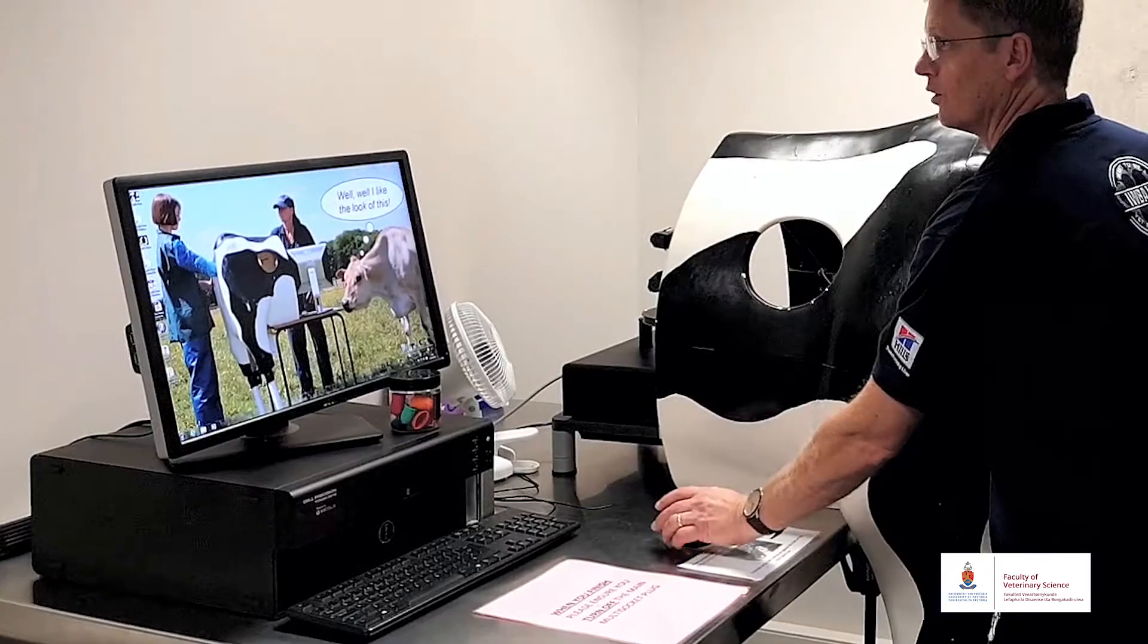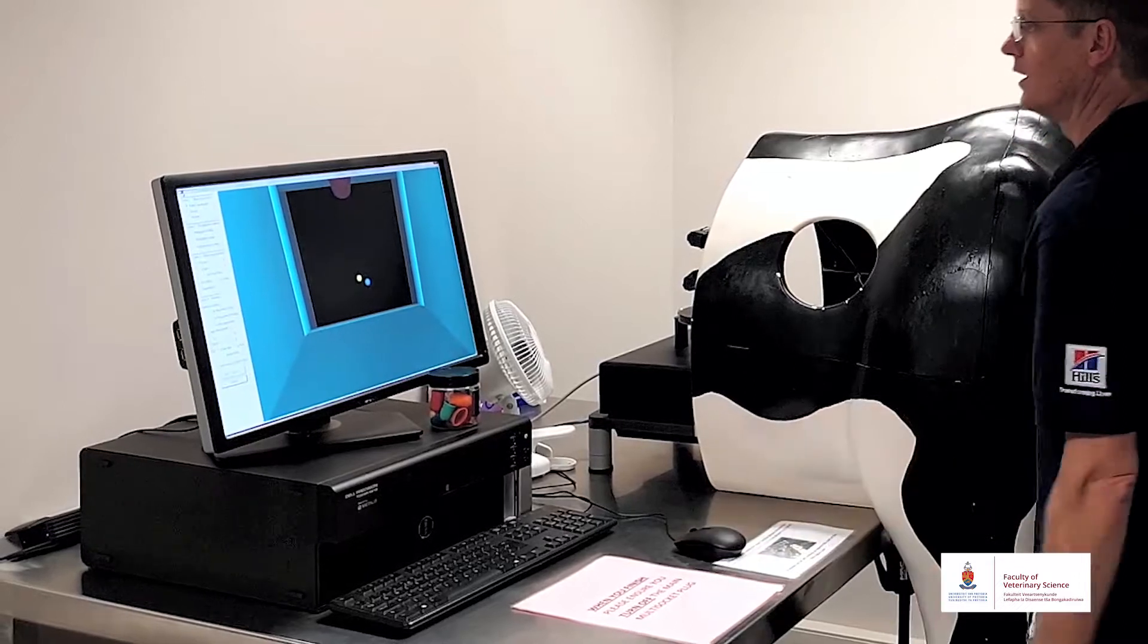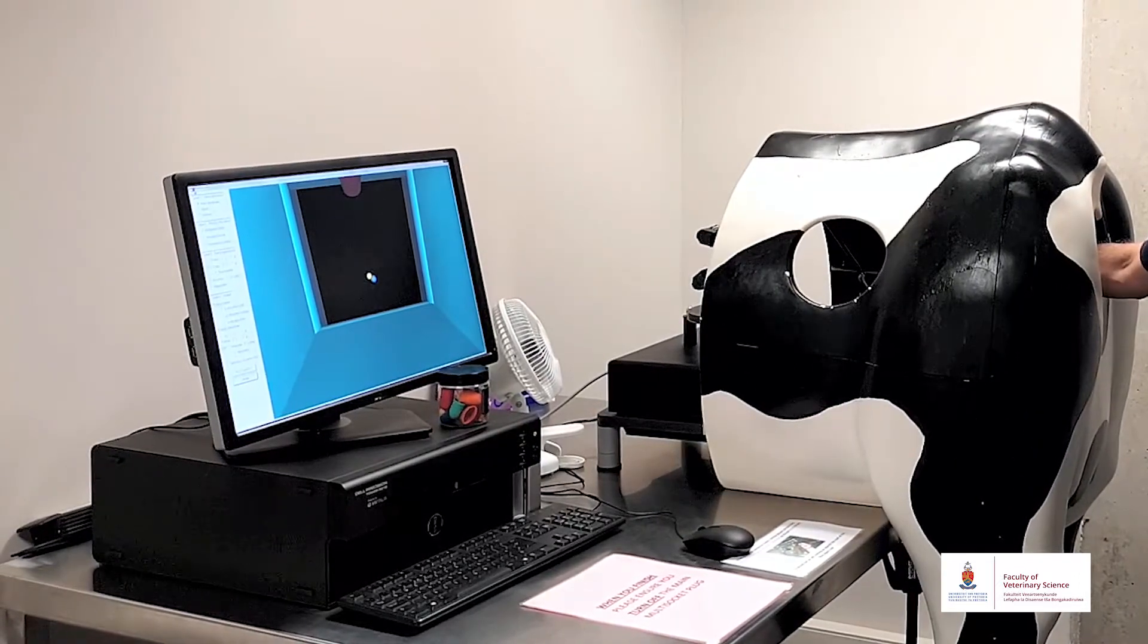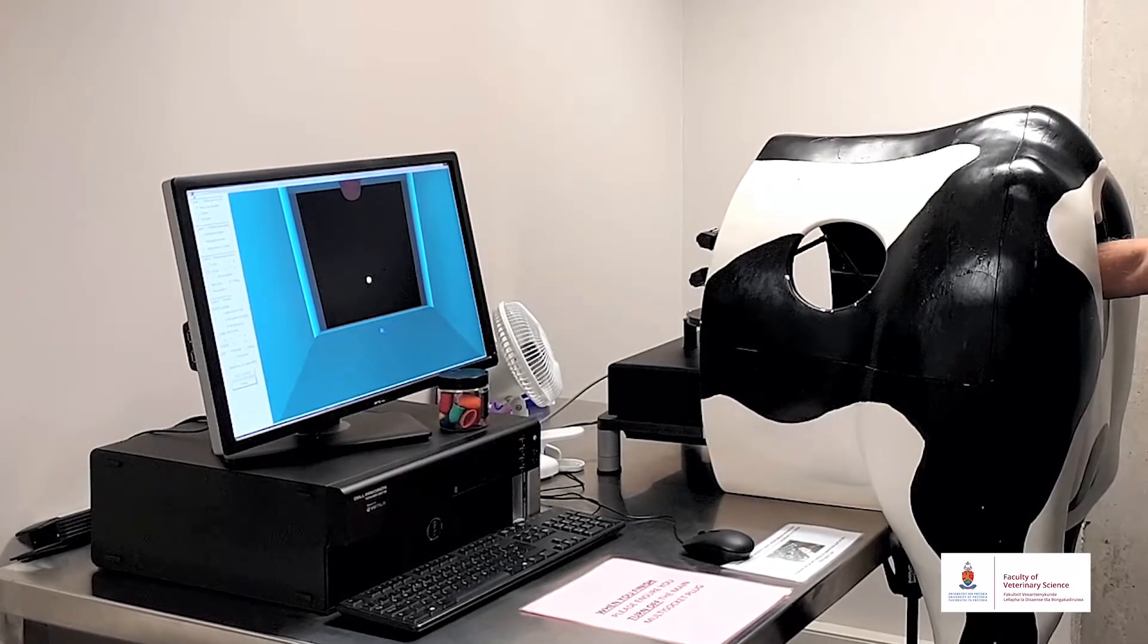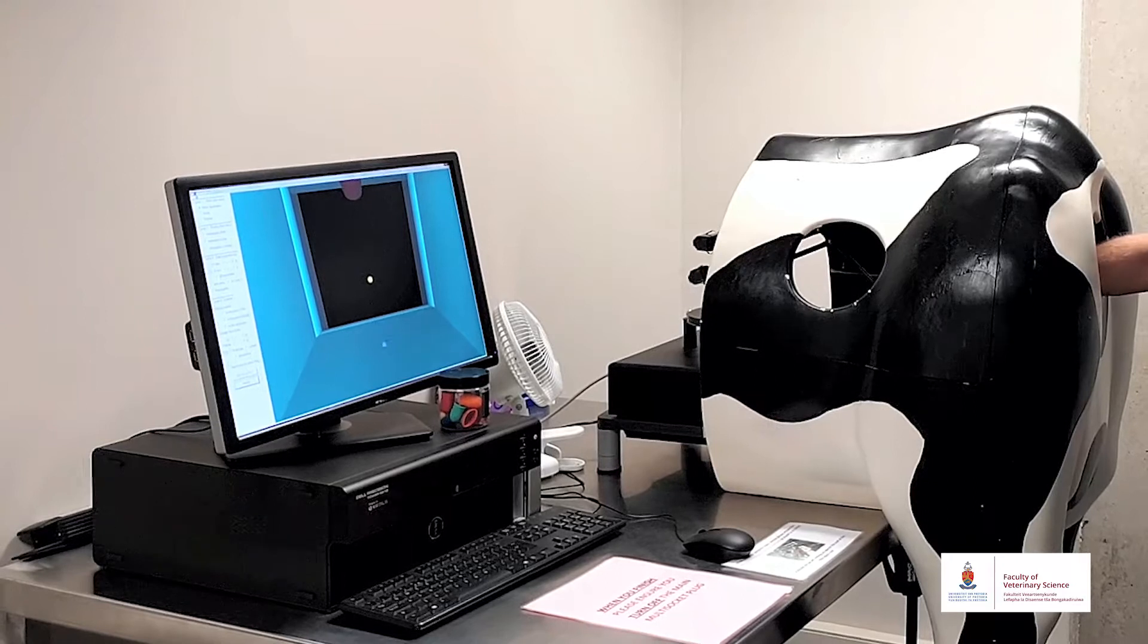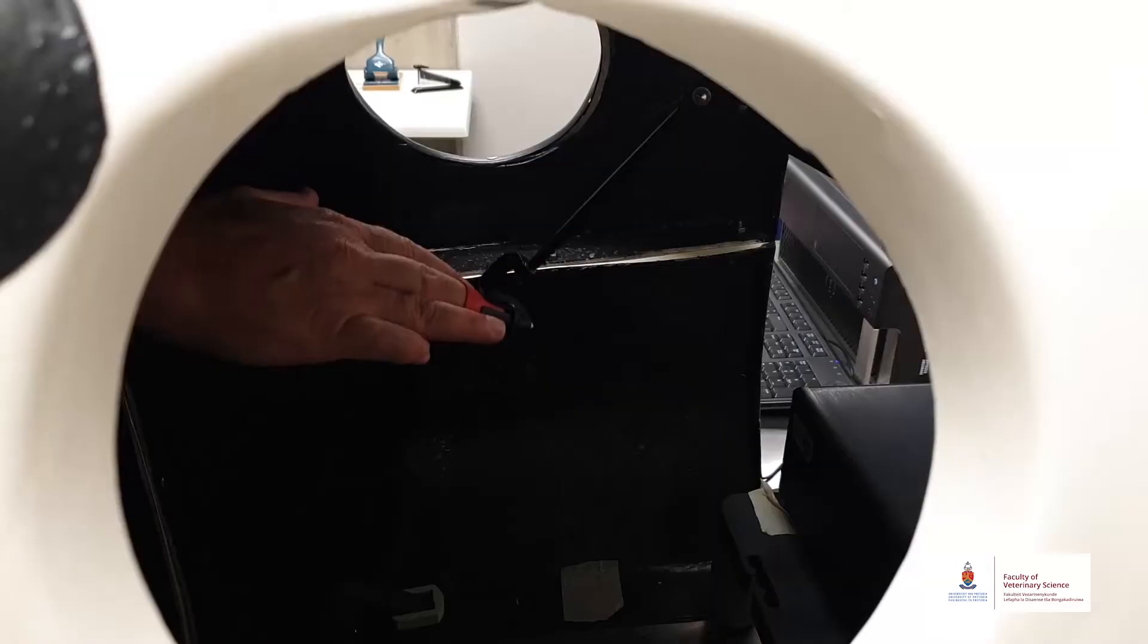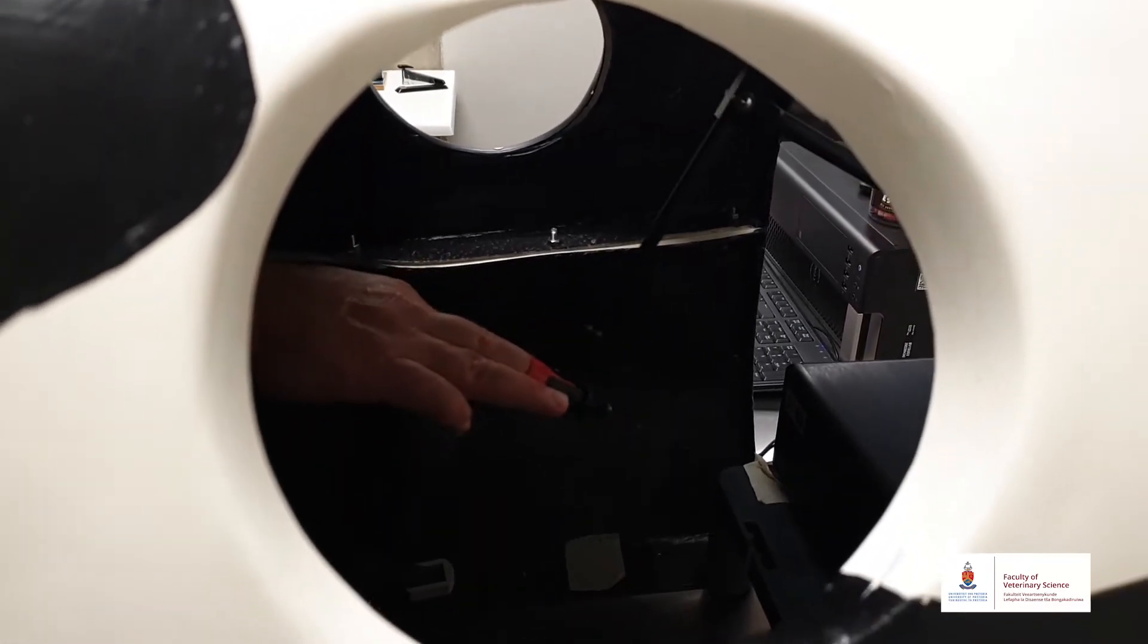On the computer I've got different settings and different options. Let's start with the haptic cow. The first thing that I'm going to do, as you can see on the screen, is that the computer will teach me where to find the edges of the pelvis in a cow. And there my finger goes over the brim of the pelvis into the abdomen.